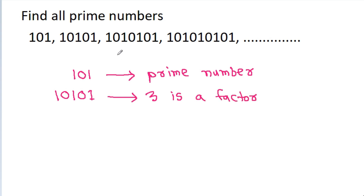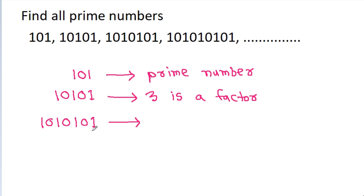The next number is 1010101. Clearly 3 is not a factor, 5 is also not a factor. And if we spend 2 to 3 minutes, then we can find that 73 is a factor.